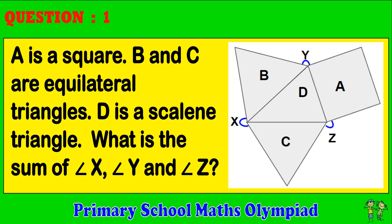Question 1: There is a square. B and C are equilateral triangles. D is a scalene triangle. What is the sum of angle X, angle Y, and angle Z?